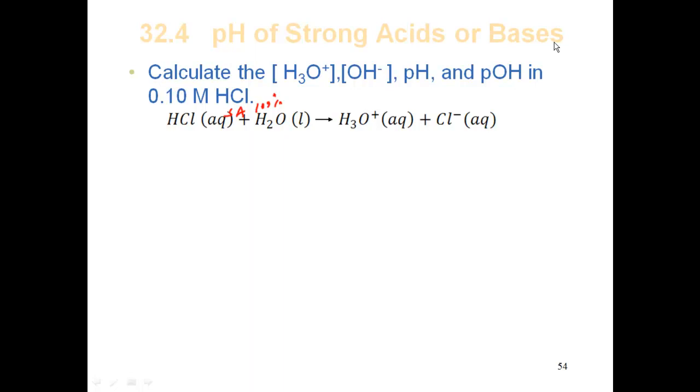Going back to your Bronsted-Lowry reaction, where your acid is donating the proton and the base is taking on the proton. Now we know that this has a 0.1 molar solution of HCl, formal concentration of it. But we know that HCl is a strong acid, which means it breaks up 100%. Which means that for every 1 mole of HCl, I'm forming 1 mole of hydronium and 1 mole of Cl-.